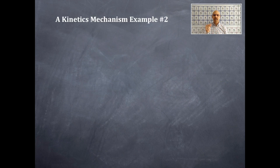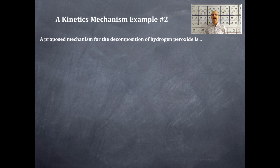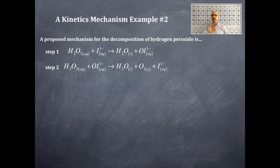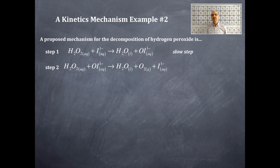So let's get moving with this problem — kinetics mechanism example number two. A proposed mechanism for the decomposition of hydrogen peroxide is as follows. Step one: H₂O₂ (aqueous) plus iodide ion produces H₂O (liquid) plus OI⁻. Step two: H₂O₂ plus IO⁻ produces H₂O (liquid) plus O₂ (gas) plus I⁻. The first step is the slow step and the second step is the fast step — that's important information for deriving the rate law.